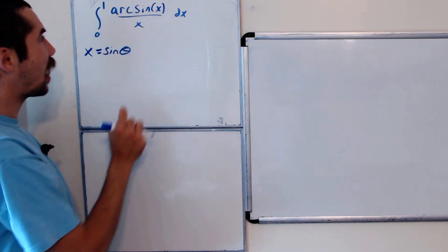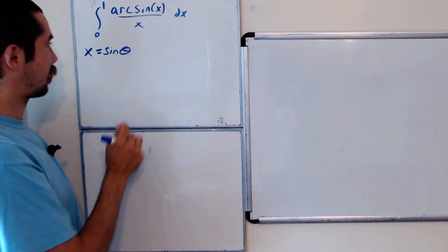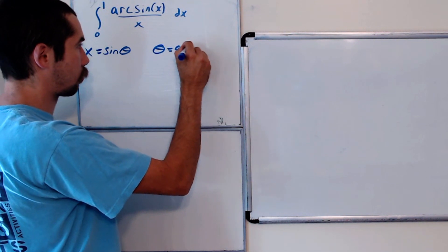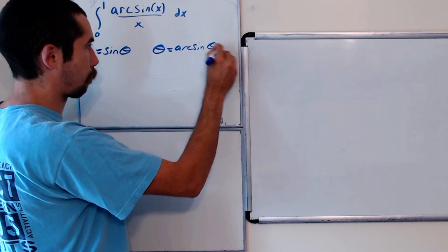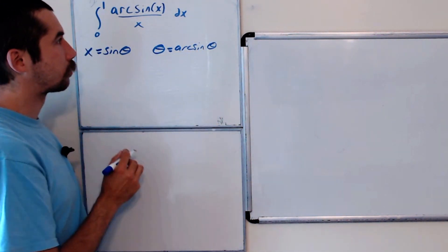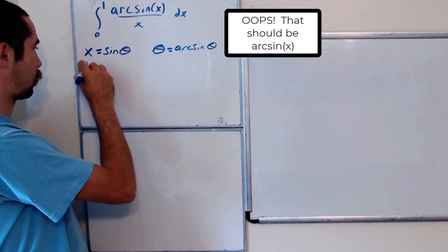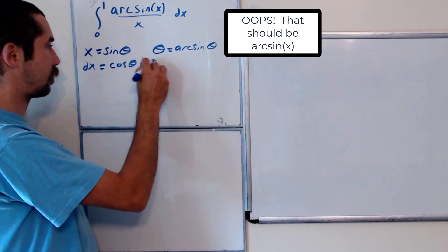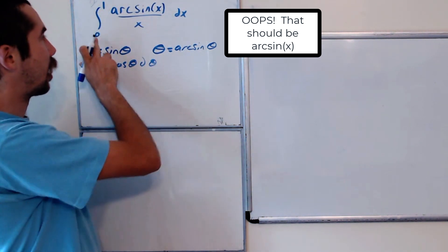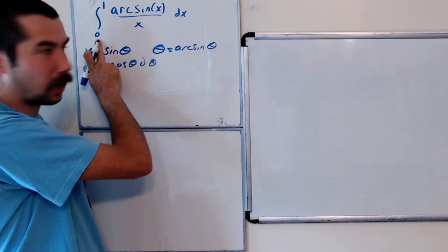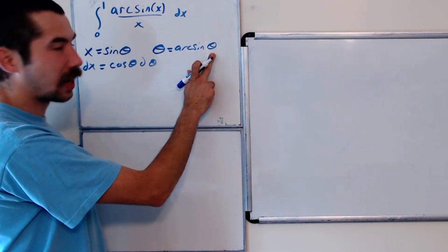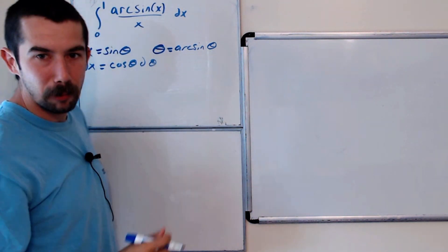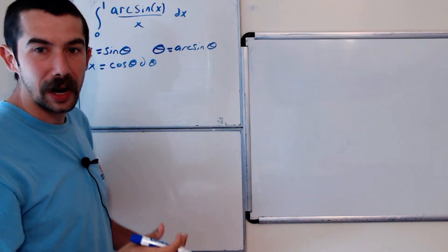If we let x equal sine theta, then arc sine of x will be theta. And dx will be cosine theta d theta. Our bounds will go from arc sine of 0, which is 0, to arc sine of 1, which is pi over 2.